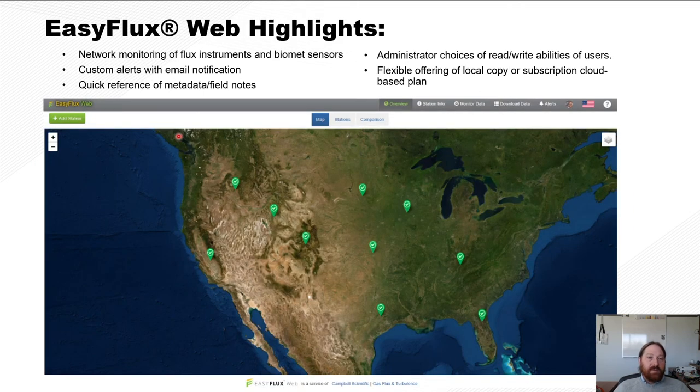We also offer another piece of software called EasyFlux Web. And EasyFlux Web has the following benefits. It allows you to monitor your network of flux instruments, biomet sensors, and even standard research-grade weather stations can be put into EasyFlux Web. It gives you custom alerts with email notification, quick reference of metadata and field notes by simply clicking on the individual stations. You can have administrator choices of read-write abilities of all your users. And we give you a flexible offering of either a local copy which can live on your own server or a subscription-based cloud plan that's hosted through Campbell Scientific.